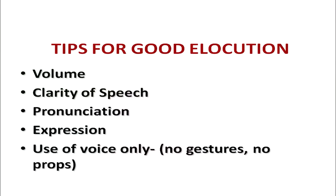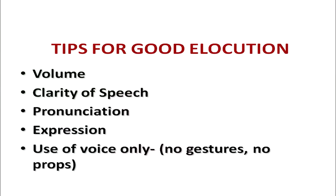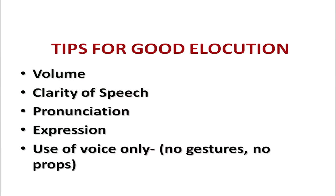Tips for good elocution: first, volume. Volume does not mean the child has to be very loud all the time — volume should be in the child's control, knowing when to be loud and when to be soft. There should be clarity of speech so the child pronounces words correctly on a public podium. If the audience doesn't understand what he is saying, nobody will pay attention. Pronunciation also needs to be correct, as many words can be mispronounced. For example, the word 'data' — some people say 'data' but the correct pronunciation is 'data' — so we need to teach children such distinctions.